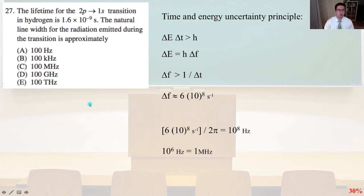Problem 27. The lifetime for the 2p to 1s transition in hydrogen is 1.6 times 10 to the negative 9 seconds. The natural line width for the radiation emitted during the transition is approximately. We're going to use the time and energy uncertainty principle here. Delta E, delta T. Change of energy times the change of time is greater than h bar. The change in energy equals h times f. Remember, that's the frequency. And so, the change of frequency must be greater than 1 over the change of time. The frequency equals about 6 times 10 to the 8th per second. 6 times 10 to the 8th per second divided by 2 pi equals 10 to the 8th hertz. We need to remember that 10 to the 6th hertz equals 1 megahertz. That equals 100 megahertz. And that is answer C.